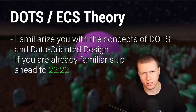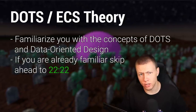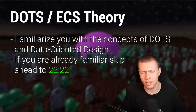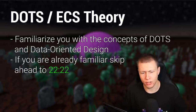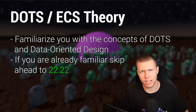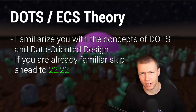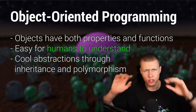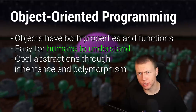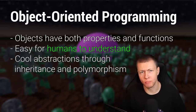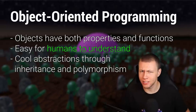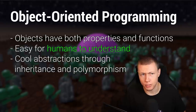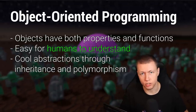Now I'll go into the theory about DOTS and ECS and cover some of the terminology. If you're already confident and familiar with Unity's DOTS and ECS, feel free to skip ahead. I want to start completely high level, outside of Unity, and talk about the difference between object-oriented programming and data-oriented design. OOP is familiar to most Unity developers — we create class files representative of specific objects, which have properties and functions. For example, a car controller has properties like top speed, acceleration rate, and turning radius, plus functions for how it drives and turns.